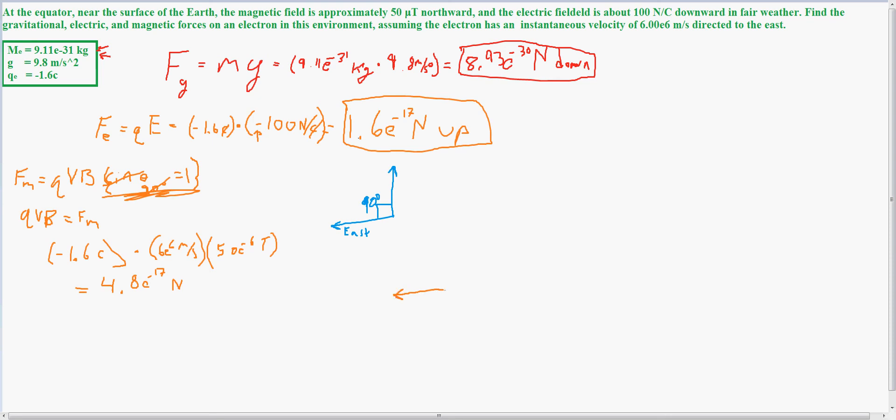And then we'll have the magnetic field going in this direction. However, because the charge is negative, it'll flip. And we will actually have this would be up right here if you were using the right-hand rule for a proton. Because we have a negative charge, it's 4.8 times 10 to the negative 17th down.